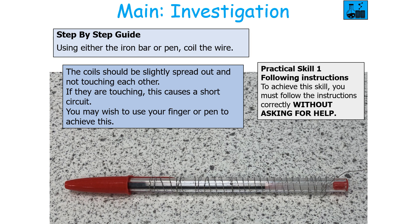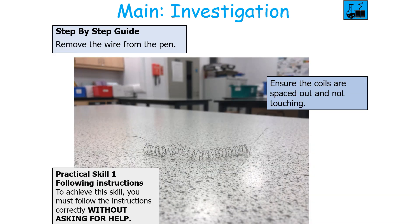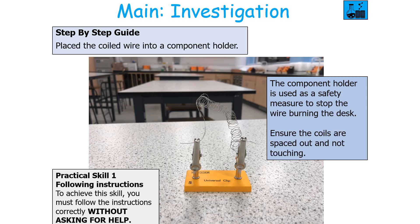You should then coil the wire around an iron bar or pen. The coils should be slightly spread out and not touching each other, as touching coils will cause a short circuit. You may use a finger, pen or iron bar to achieve this spacing. Remove the wire and ensure the coils are spaced out and not touching. The component holder is then used to hold the coiled wire, acting as a safety measure to stop the wire burning the desk.